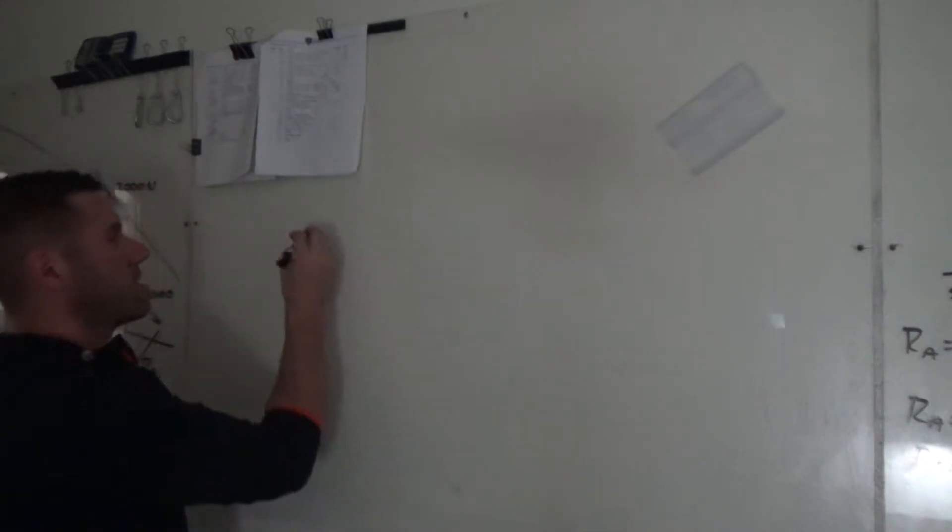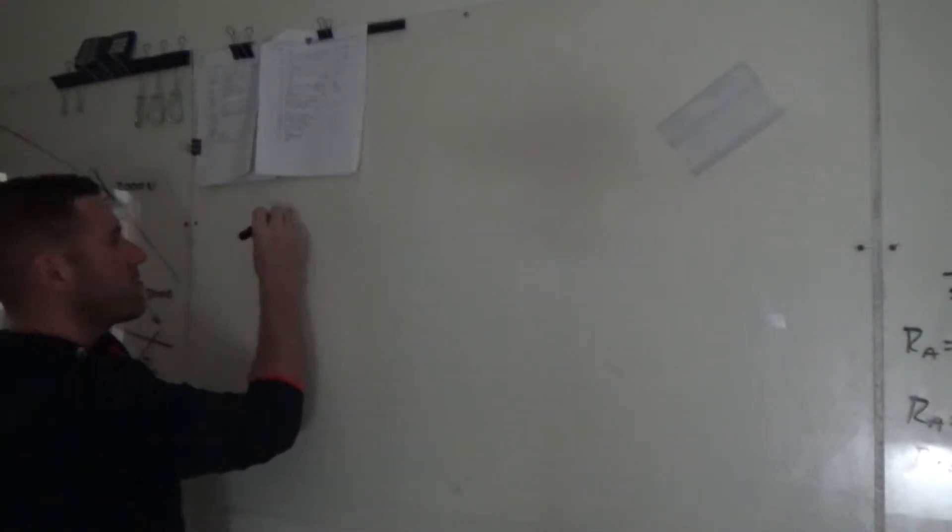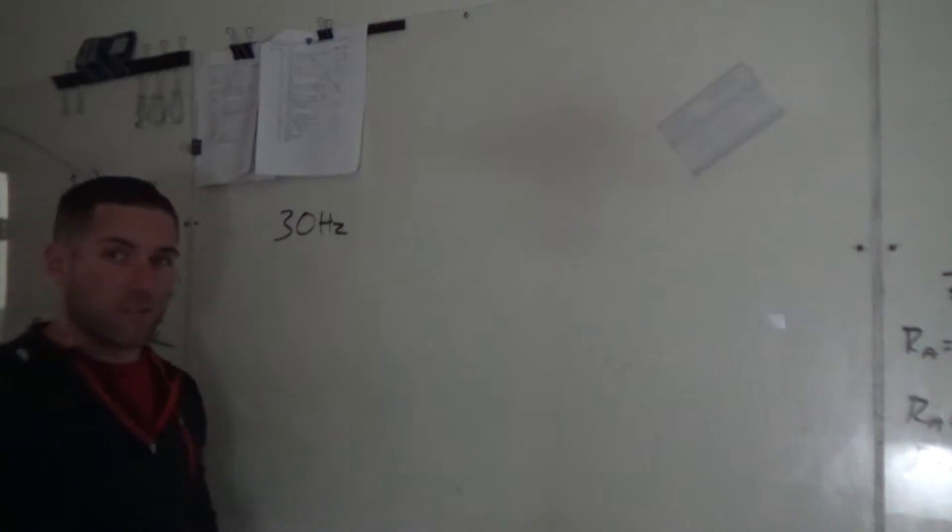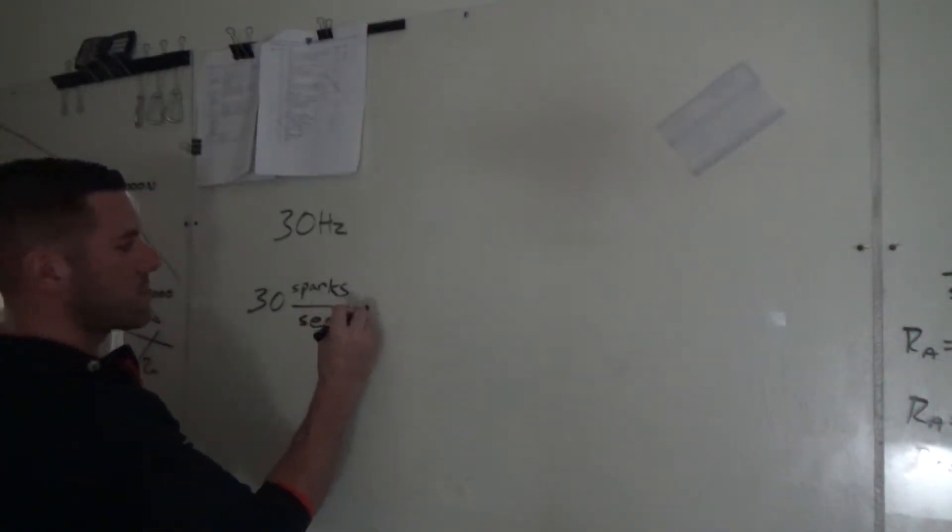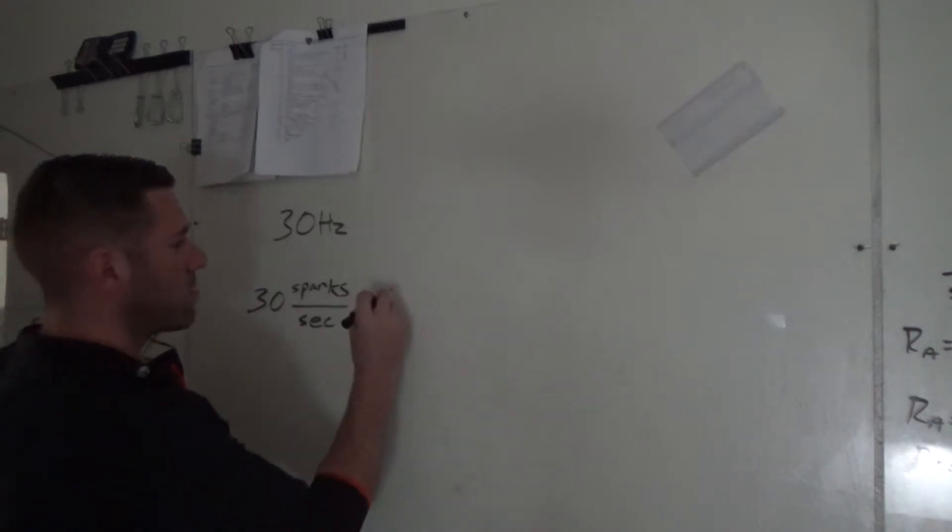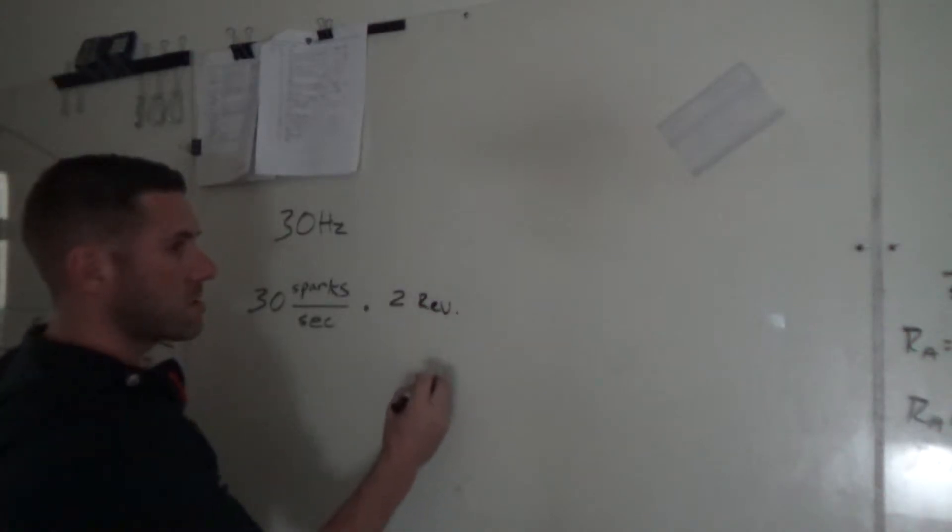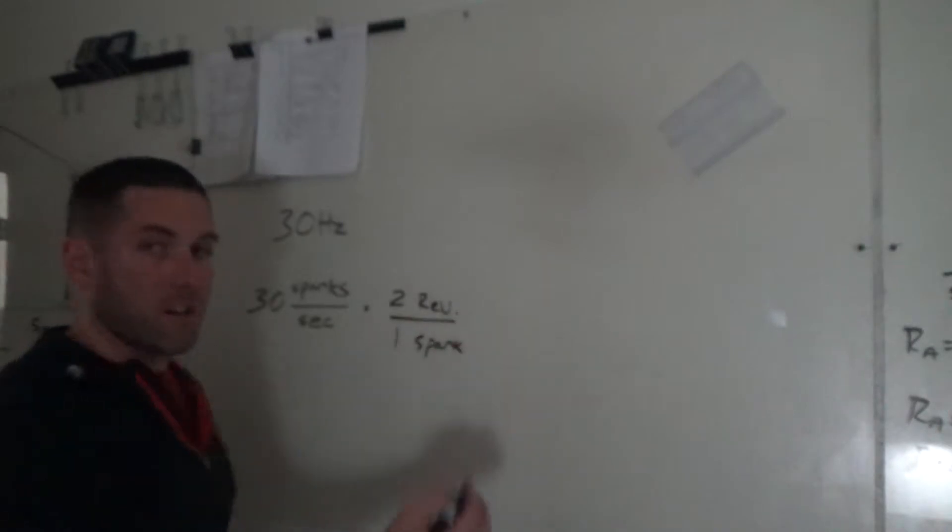How do we get that? When we dumb it down completely. So what we got on our reading was 30 hertz, right? How do we actually get to revolutions per minute? Well, let's break it down. What the multimeter is seeing is 30 sparks per second. Now we need to multiply by that two. What does that represent? That represents two revolutions per spark, which we already figured out.